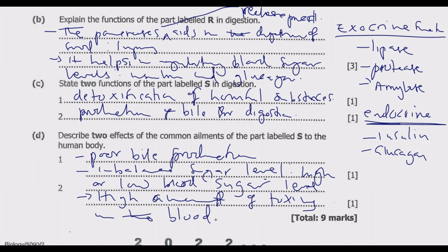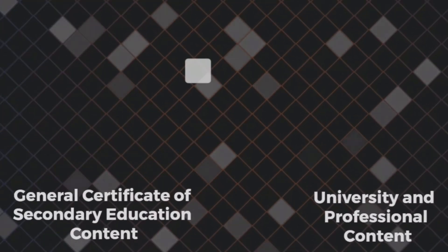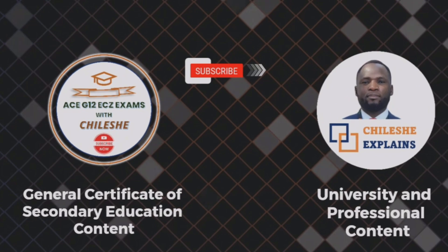The liver neutralizes all toxins or harmful substances found in the blood or in food. It is important to drink enough water and eat well to help the liver perform its function effectively. Other key signs that the liver is not performing well include: yellowing of the skin and eyes, swelling of the abdomen and legs, changes in the color of urine or stool, and easy bruising. That is how you answer this question to get the marks. Please join me in the next episode as we look at question 4.